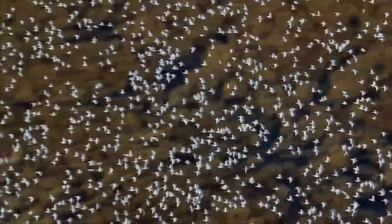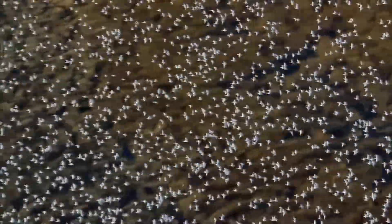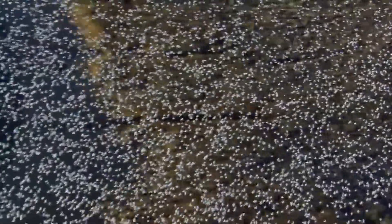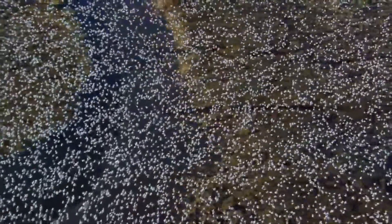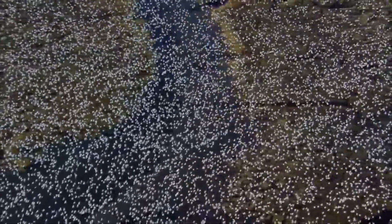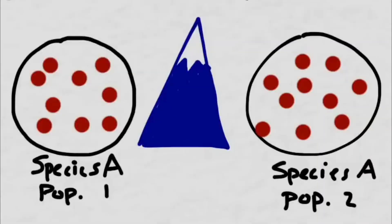Across many, many generations, birds of the same species will continue to mix with each other and keep the population diverse. But what if something happens to split the bird population in half and keep them from sharing genes?